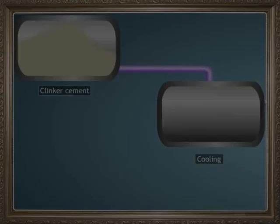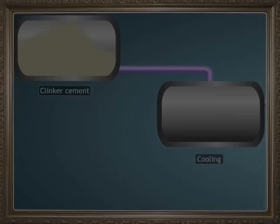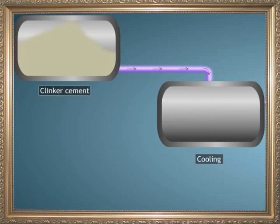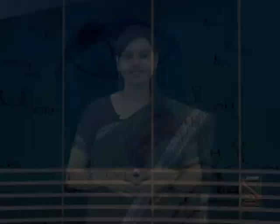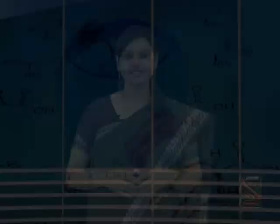This product is called clinker cement. The clinker cement is gathered, cooled, ground to fine powder, and mixed with 2 to 3% of gypsum. This product is the final cement. Cement reacts with moisture, and to avoid its hardening before use, it is kept in air-tight bags for selling. There are many other products manufactured in industries, and we will learn about more such products.